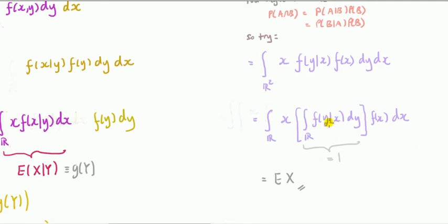And using property of probability density functions, conditional or unconditional, we know that if we integrate over all their outcomes, it's going to come to 1.